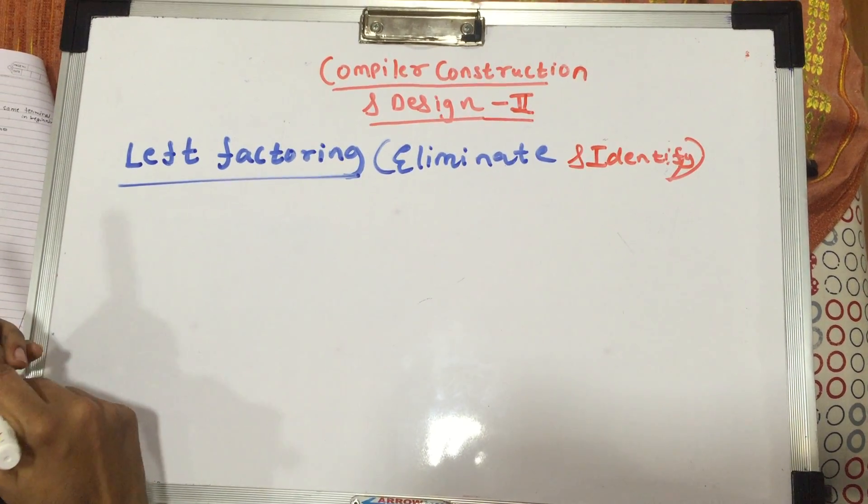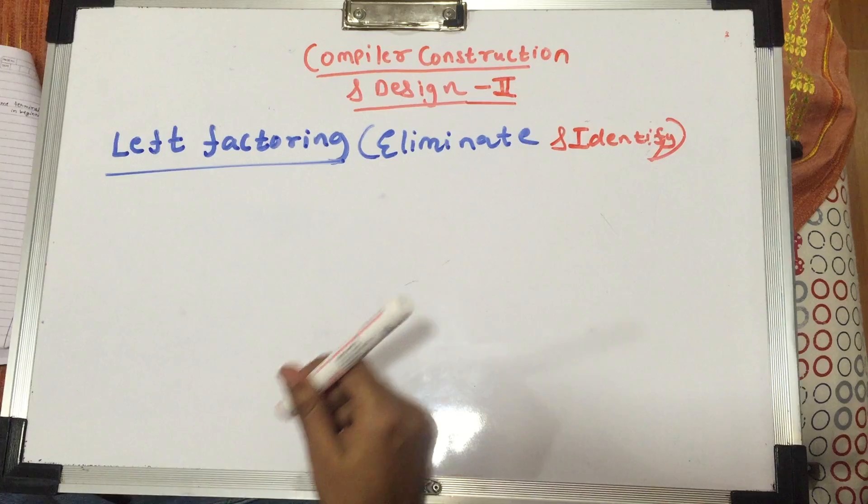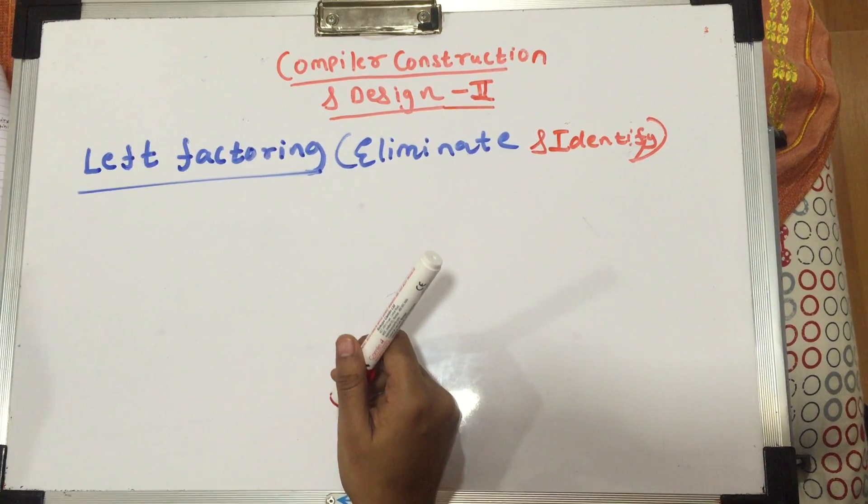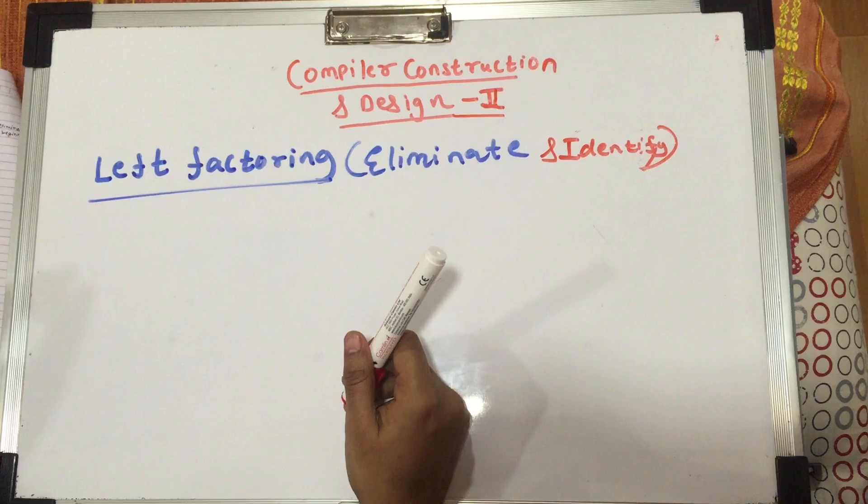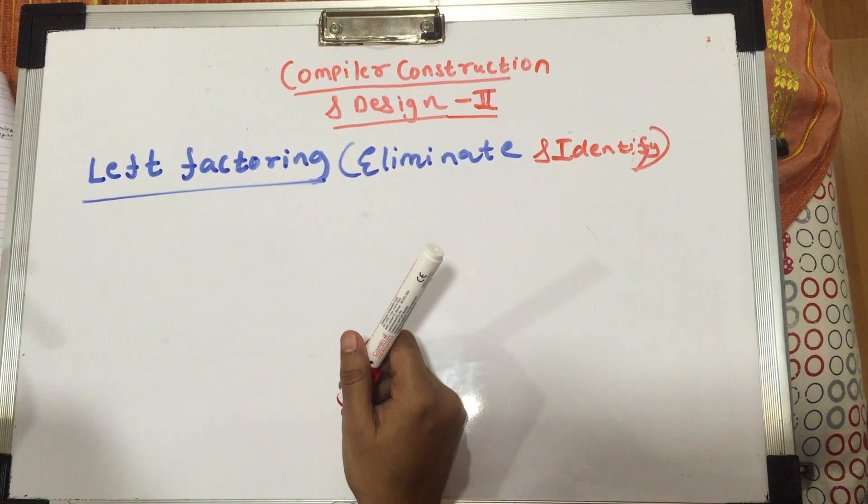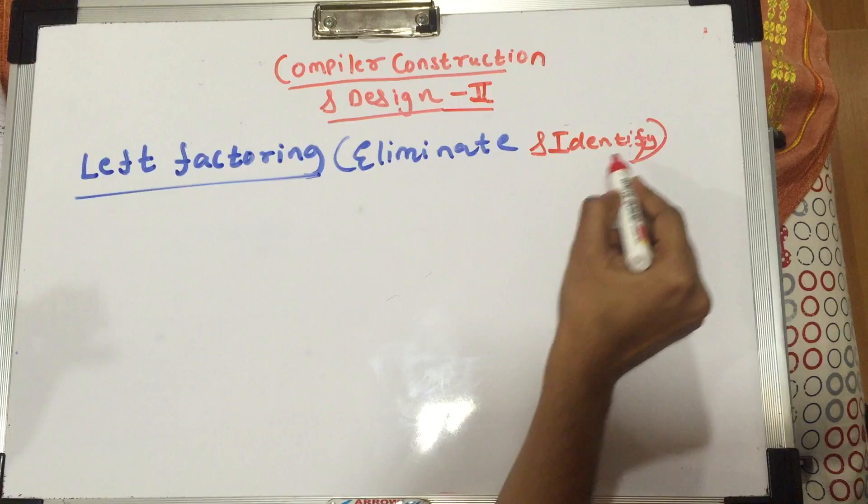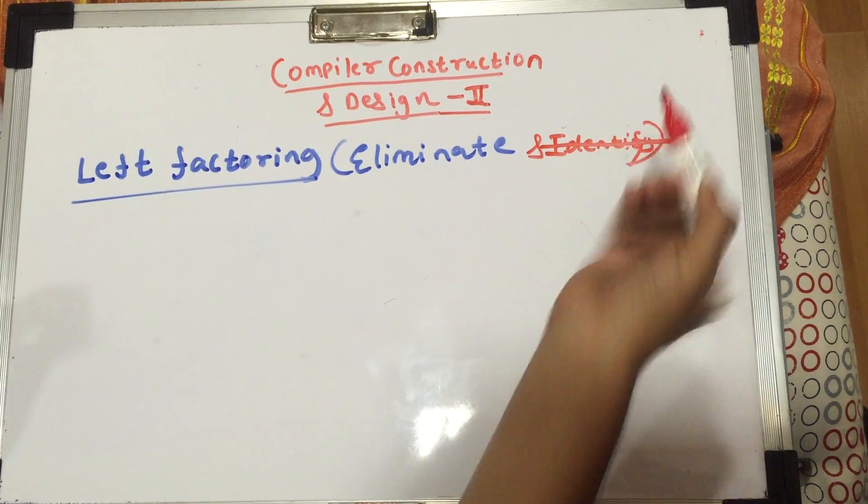Hi guys, welcome back to the compiler construction and design lecture number two. In this lecture, we're going to study left factoring and how to eliminate it and identify it. This is the easiest part.